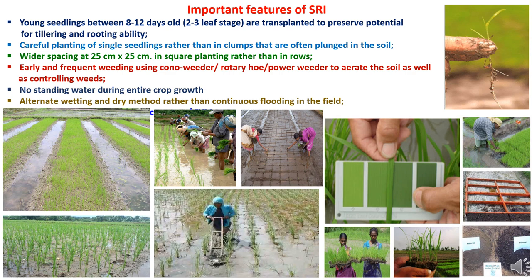Fourth is weeding and aeration. In SRI method of rice cultivation, use a simple mechanical rotating hoe or cono-weeder that churns the soil. Two weedings are required, which provide more root growth due to reduced weed competition and aeration of soil, giving roots more oxygen and nitrogen due to increased microbial activity. Each additional weeding after two rounds results in increased productivity.